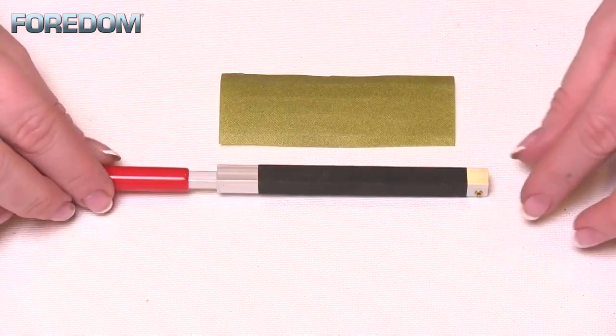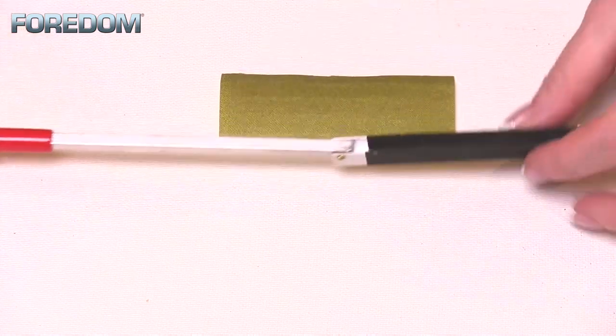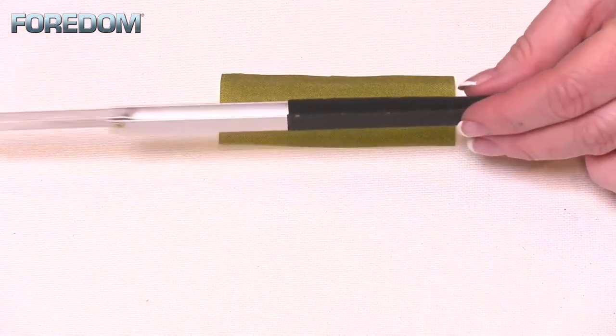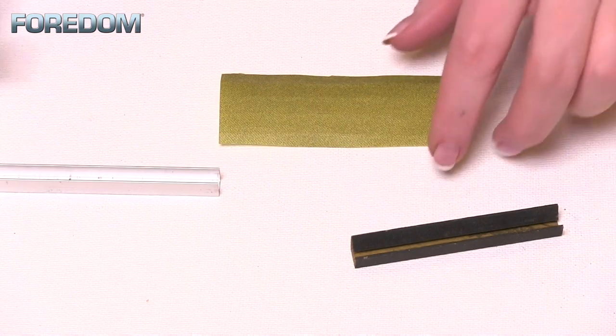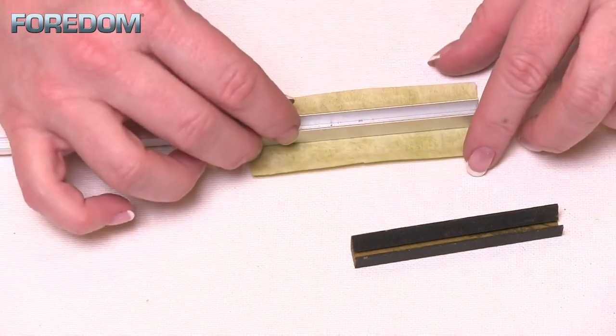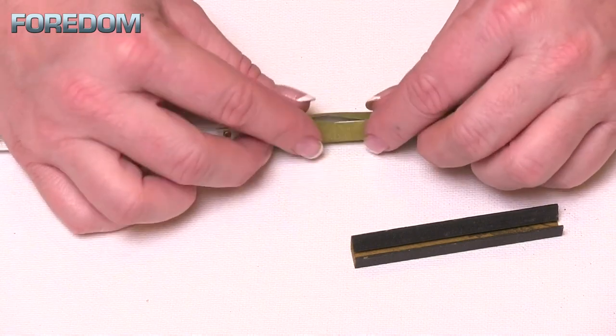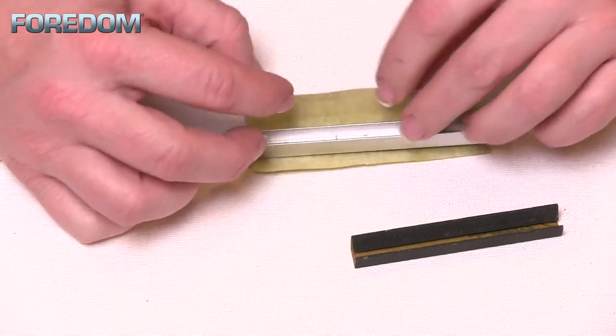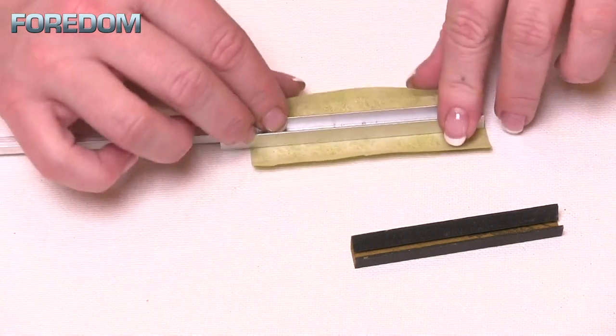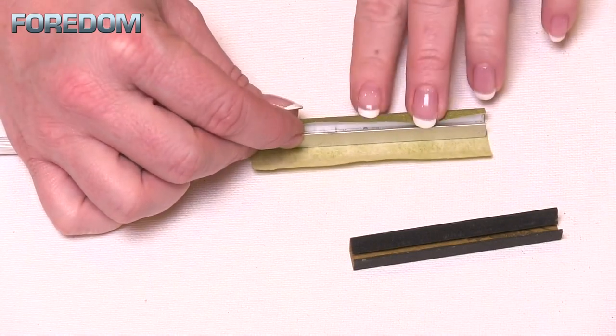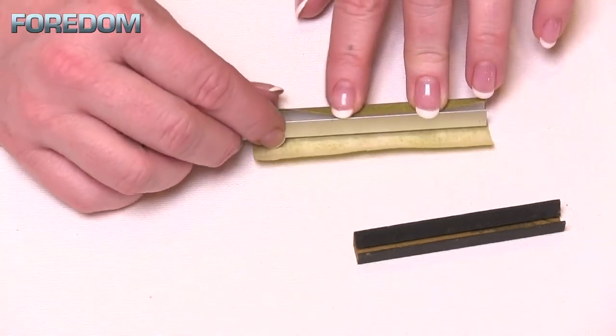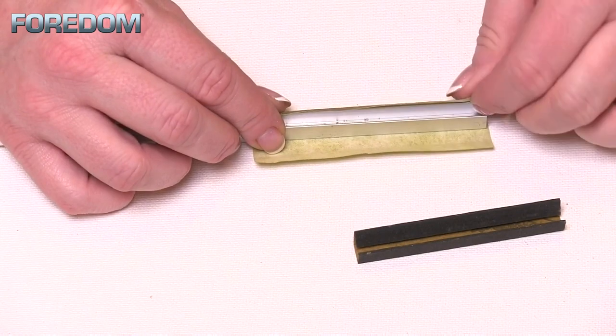To swap out your different sanding grits, you'll just rotate this around, slip that off, and then place your new piece on here. Now you have a couple of different options - you can overlap it, but because I want this nice and tight, I find that it's easier to do one side at a time. So first thing I'll